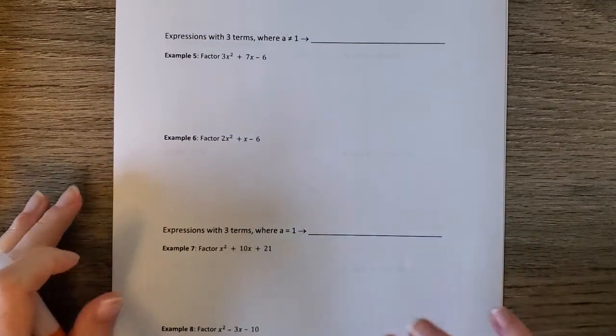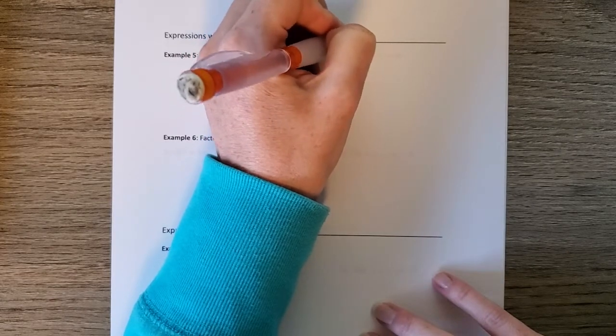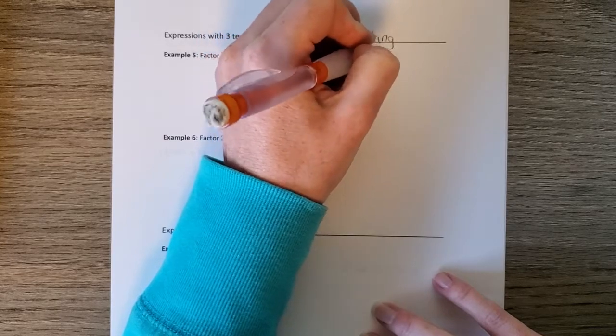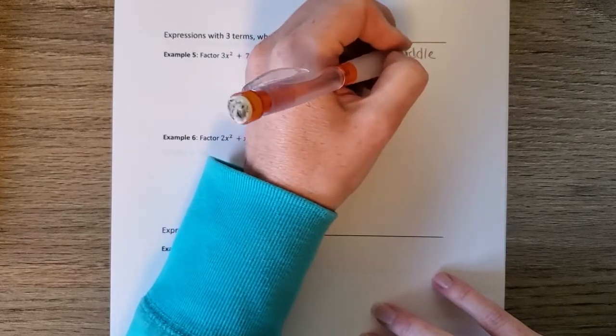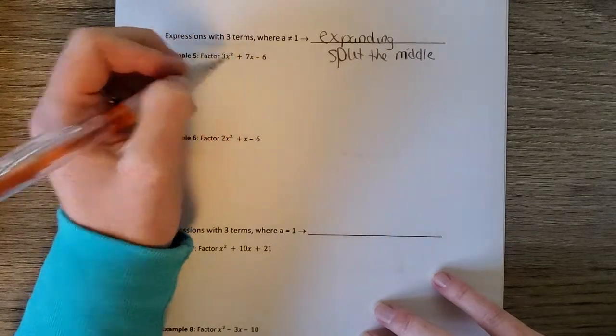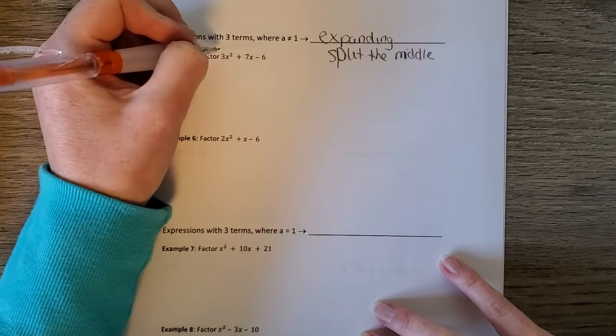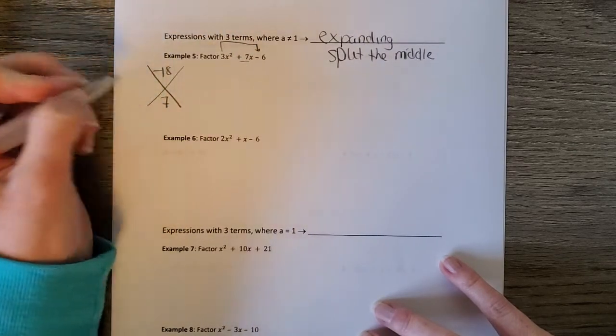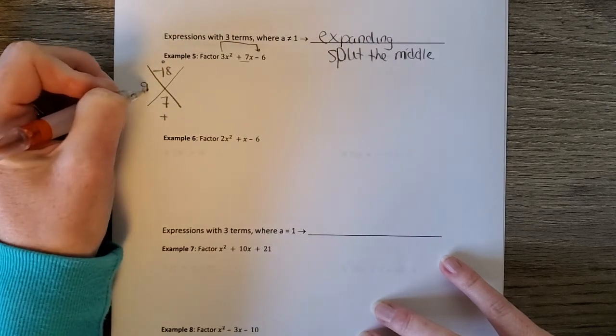Then we learn 3 terms where a is not equal to 1. So this is factoring by expanding or split the middle. Okay, so they're both different terms for the same thing. So we either expand it to make it 4 terms, or we call it split the middle or we split the middle to make the 4 terms. So first times last, negative 18. The middle is 7. What multiplies a negative 18 and adds to 7 is 9 and negative 2.